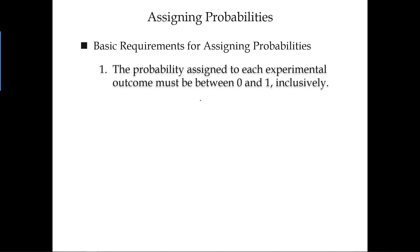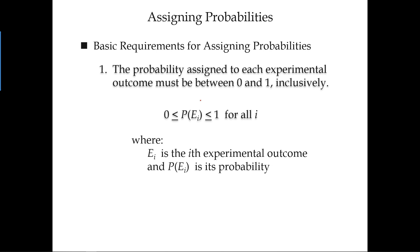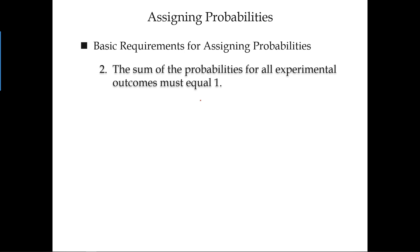First, any probability assigned has to be between zero and one, inclusive. Second, if you have n possible outcomes for an experiment, all the probabilities of those n possible outcomes added together must equal one. Those are the two basic principles guiding us to assign probability, and no matter which method you use, these two conditions must be satisfied.